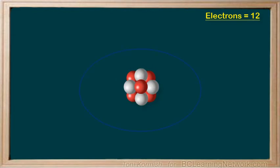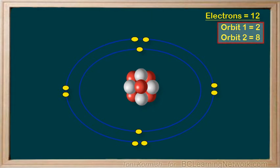We know that the first orbit can hold up to two electrons. We also know that the second orbit can hold up to eight electrons. So far, we have distributed 10 electrons, but magnesium has 12 electrons in a neutral atom.